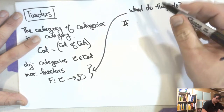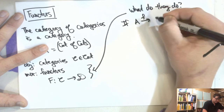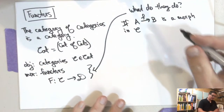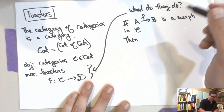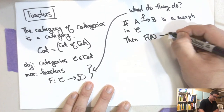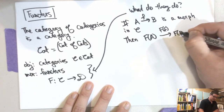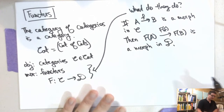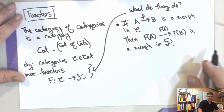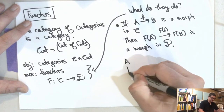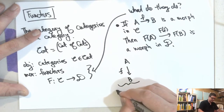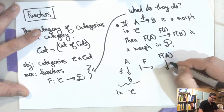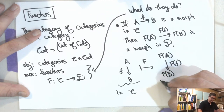What a functor F needs to satisfy: if A → B is a morphism in C, then F maps this to a morphism F(A) → F(B) in D. So objects and morphisms in C get mapped to objects and morphisms in D.